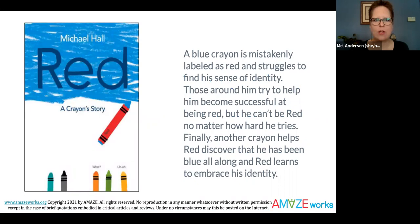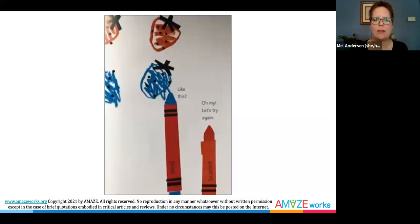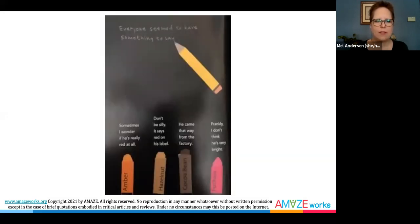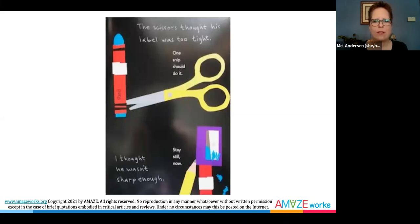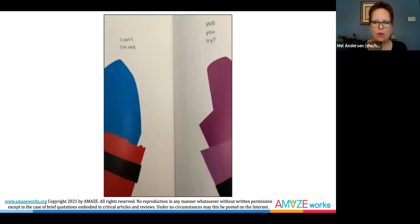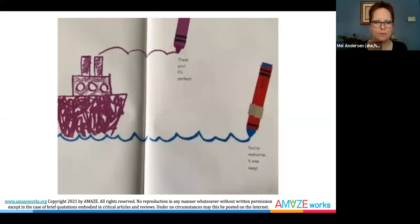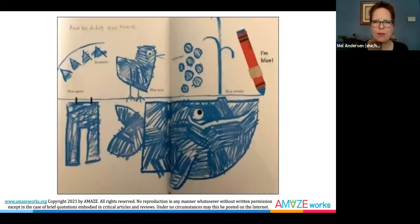The book Red: A Crayon Story by Michael Hall provides the opportunity to talk with children about how to be responsive to others' needs even when adults may not be. In this story, a blue crayon is mistakenly labeled as red and struggles to find their sense of identity. Adults and peers try to help them become successful at being red, but they can't be red no matter how hard they try. While the intentions of the adults and peers are to be helpful, the impact of their actions leaves red feeling miserable. Finally, a purple crayon helps red discover that they have been blue all along, and red learns to embrace their identity. When red is able to be their true self, there is no limit to what can happen.